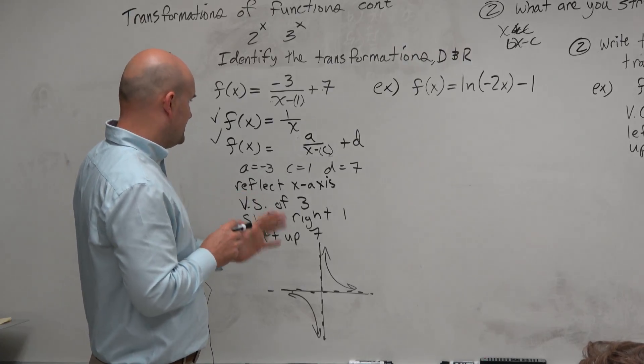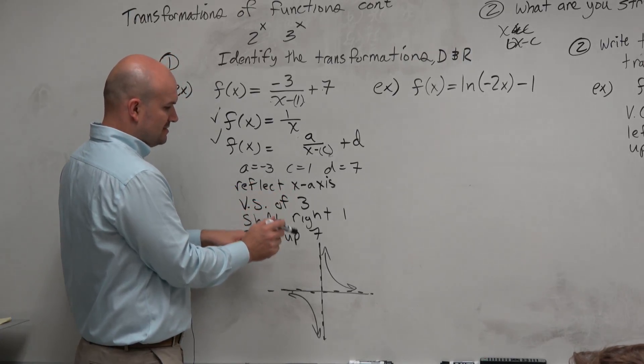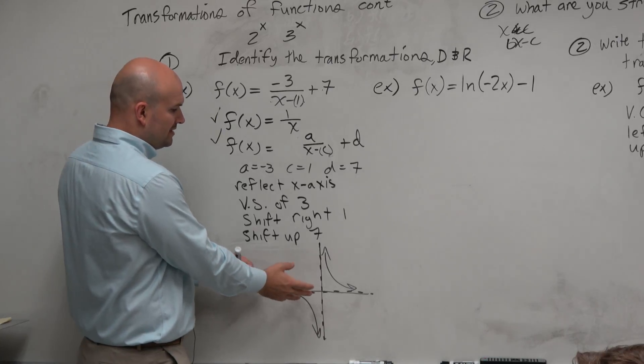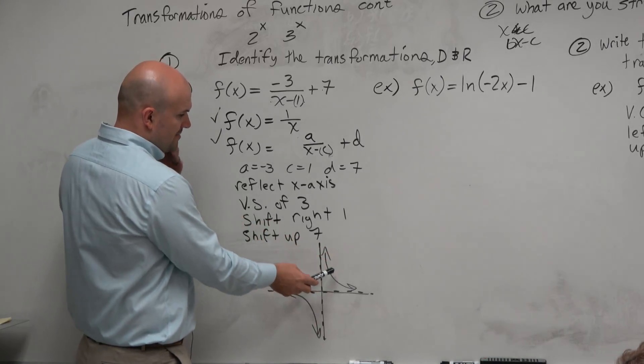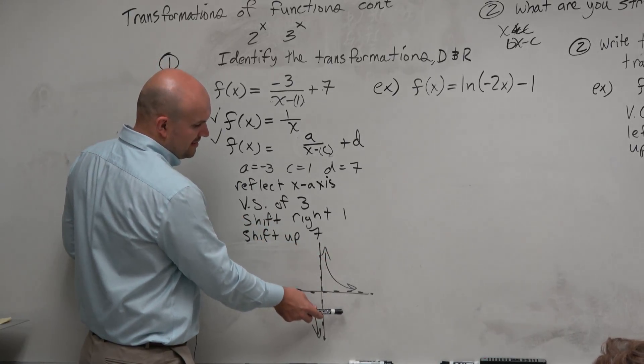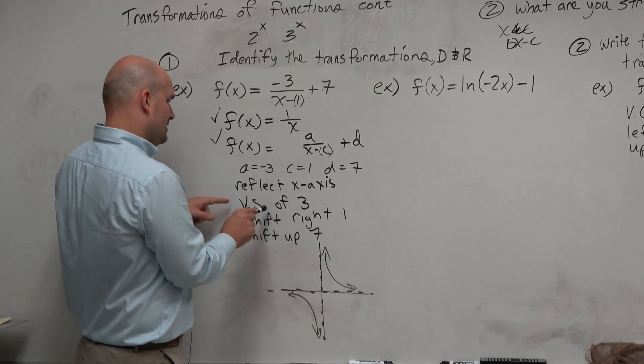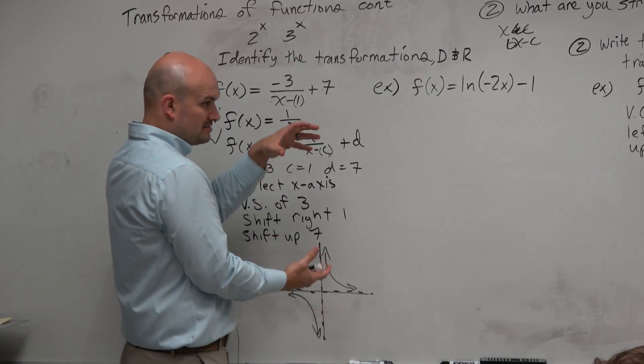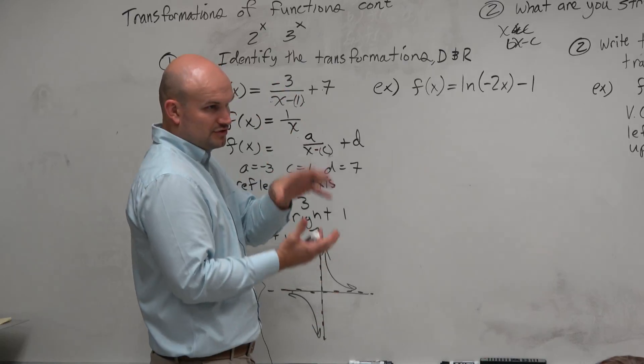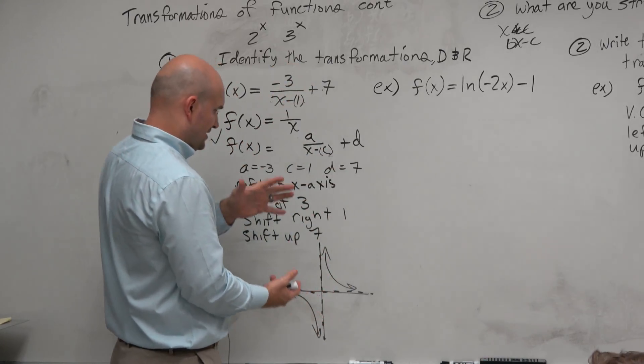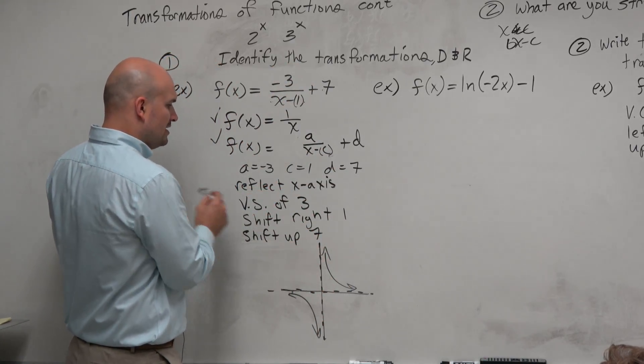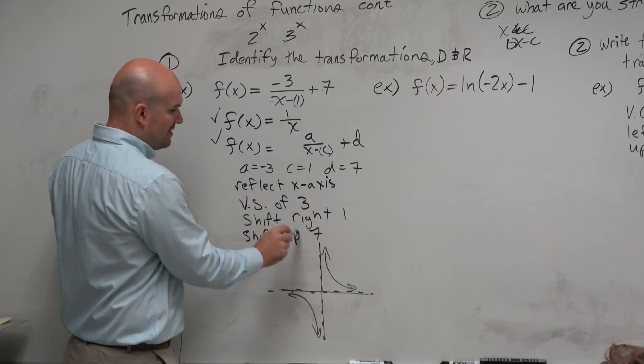But now, what we're going to do is we need to reflect this about the x-axis. So this graph is now being reflected about the x-axis. That means this hyperbola is going to be down here. This one goes up here. There's a vertical stretch of 3. So I don't really care how you guys graph the vertical stretch. Don't worry, it's just being stretched. So you're not going to ever be graded on your graphing. The graph gets shifted right 1 and then up 7.